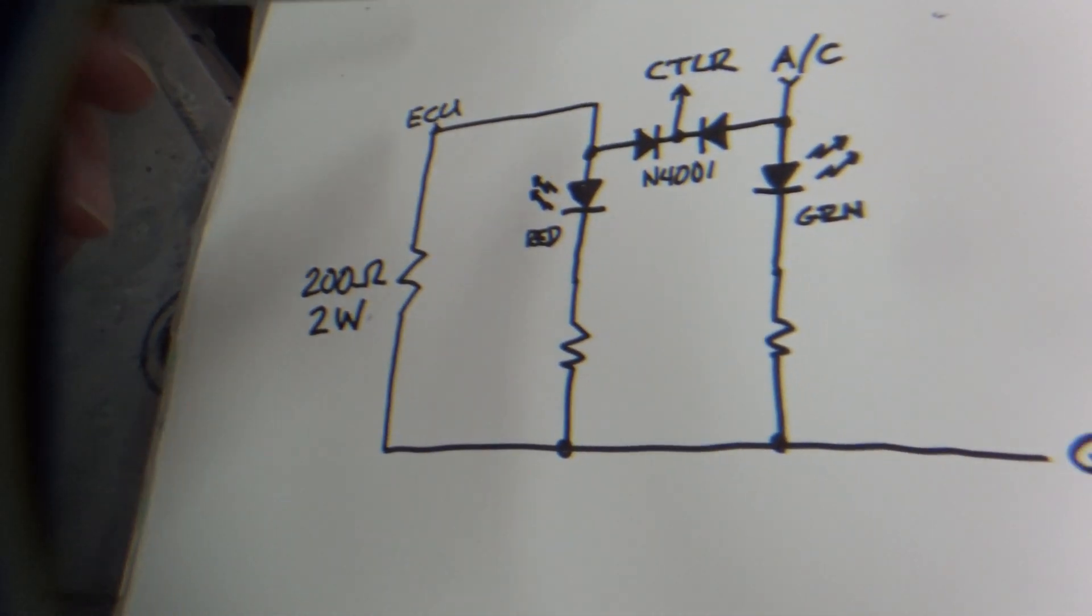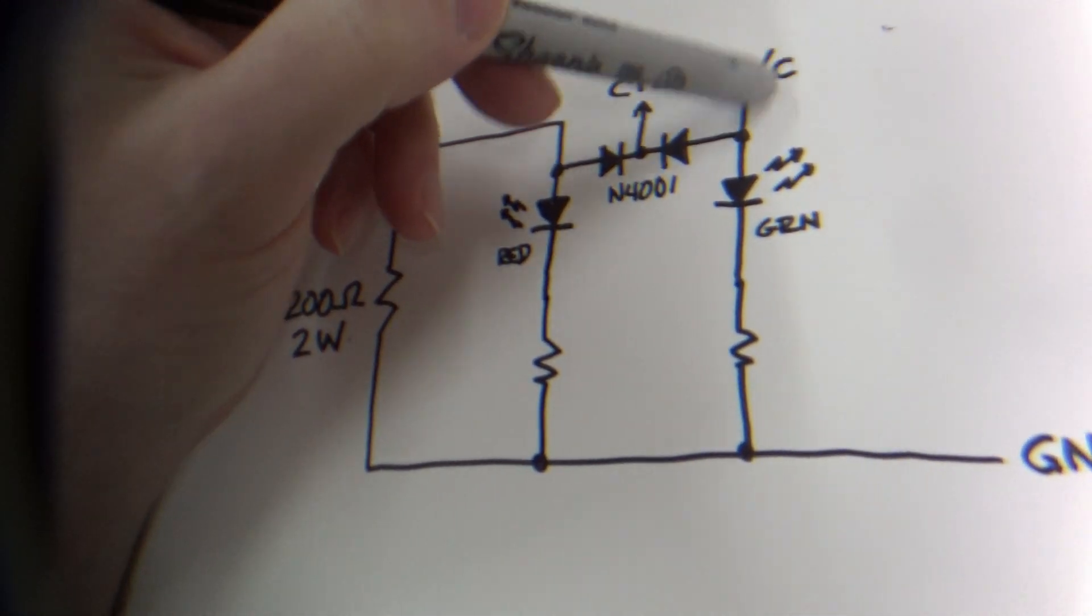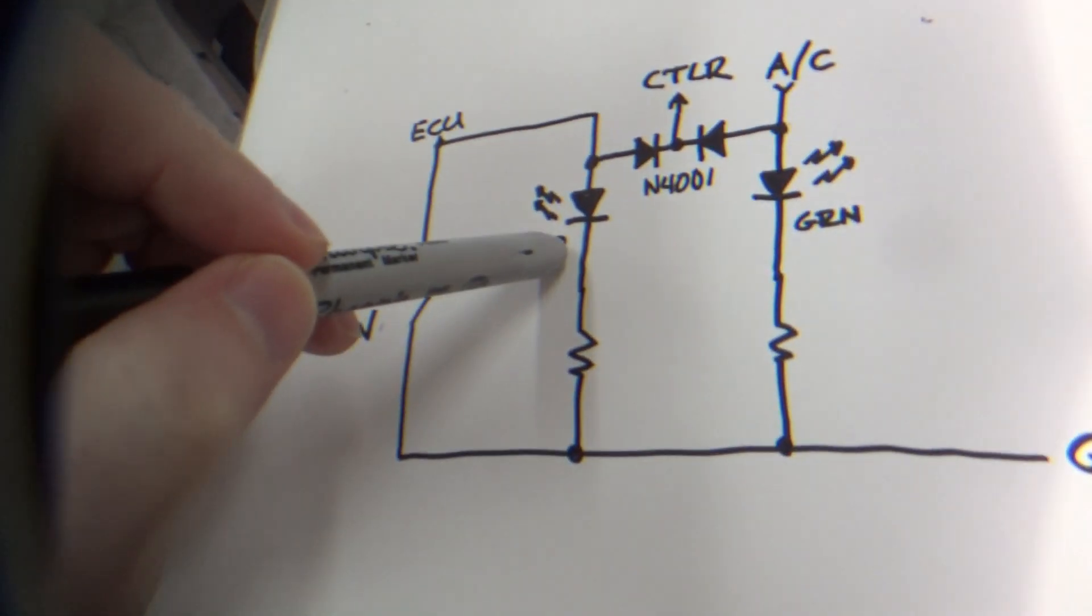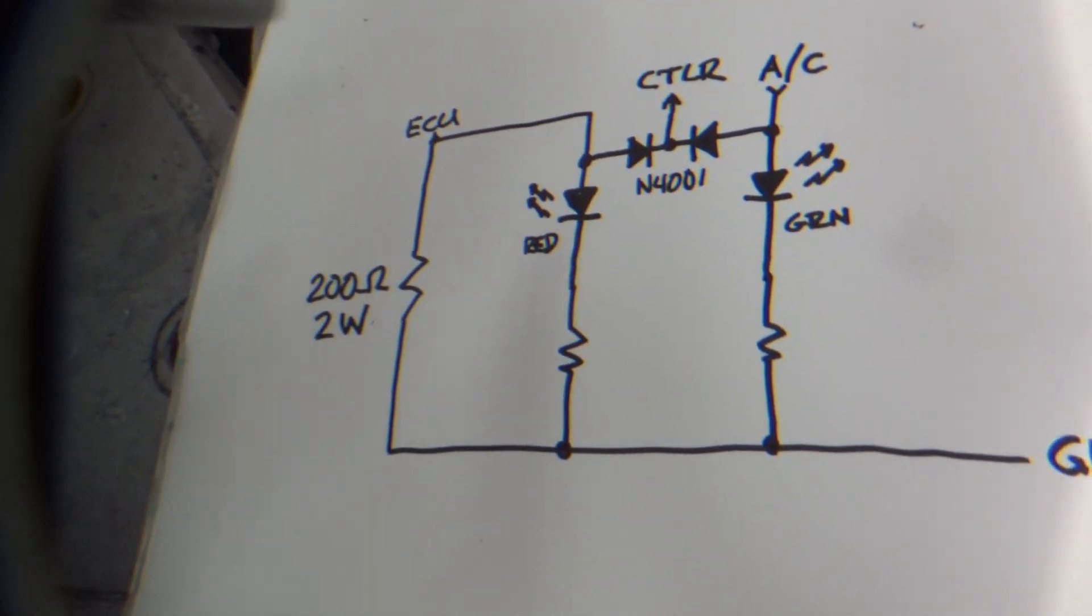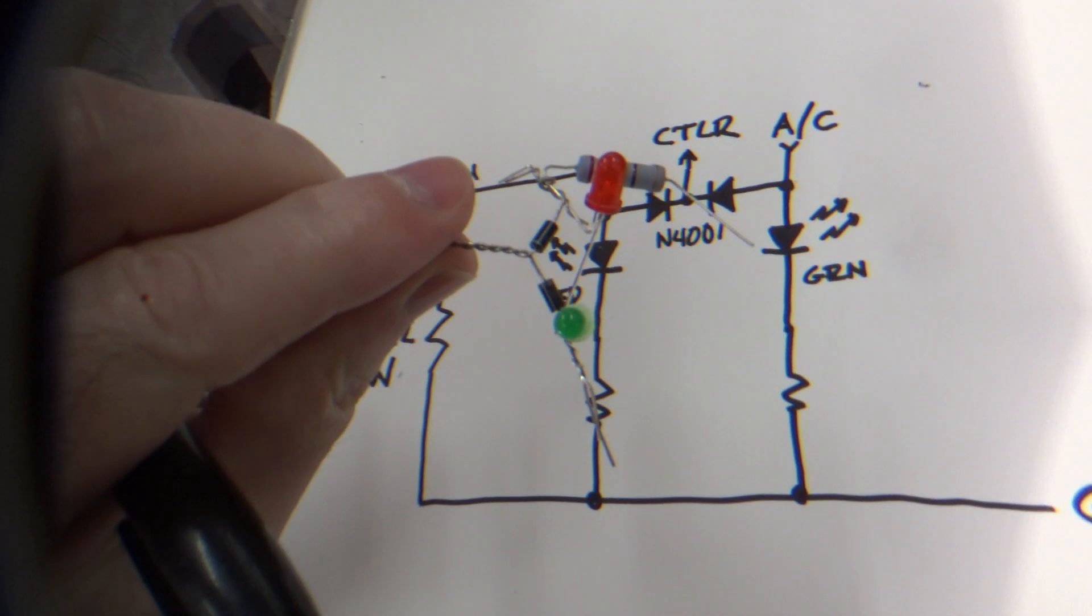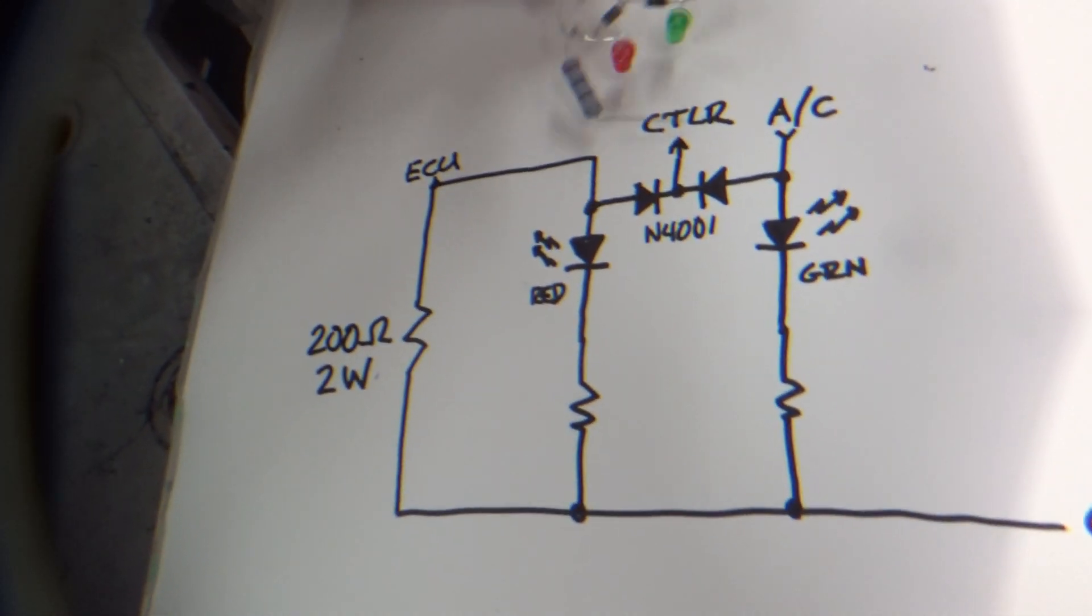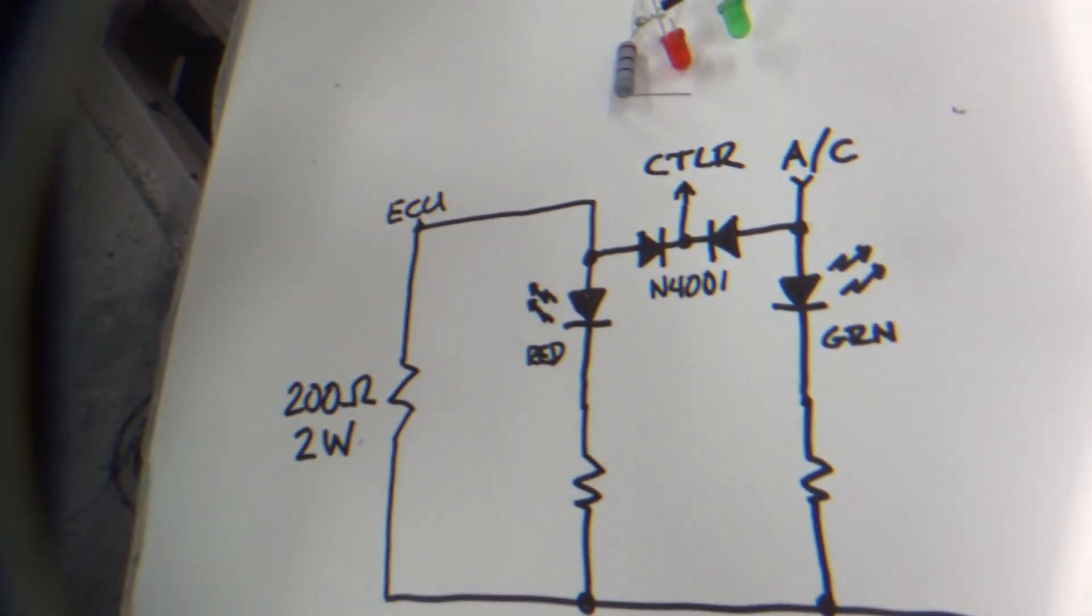Here we have two LEDs. These are just for me to be fun because I like blinky lights. If the ECU turns on, a red light will turn on. If the AC turns on, the green light will turn on, and if both turn on then both of them turn on. That's what we're trying to build.